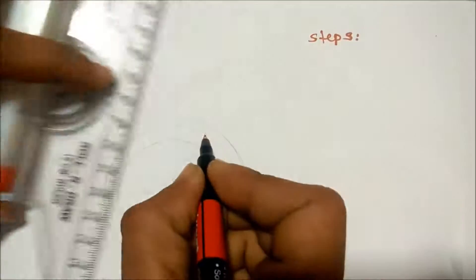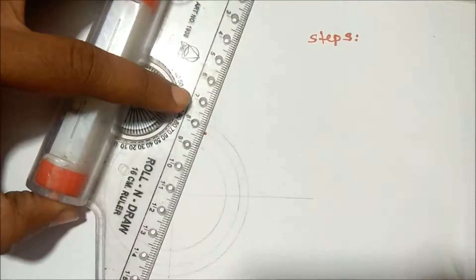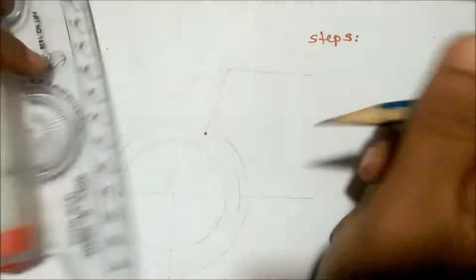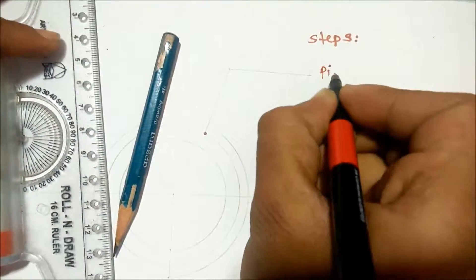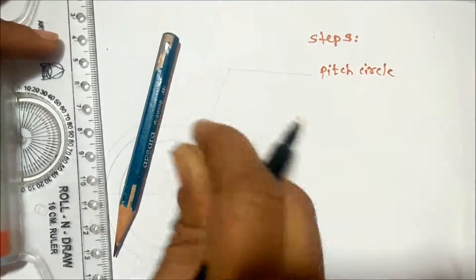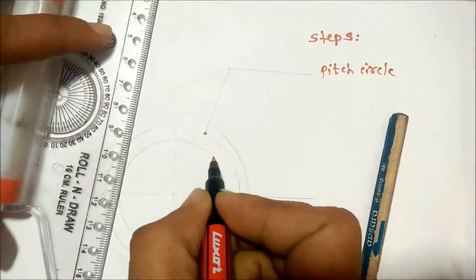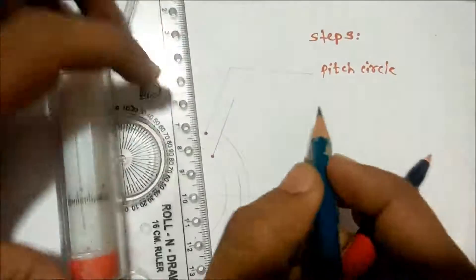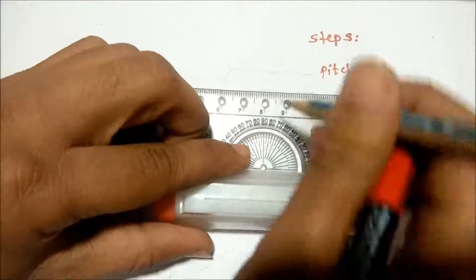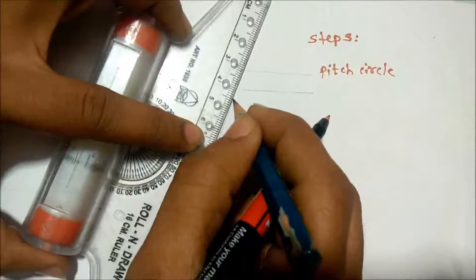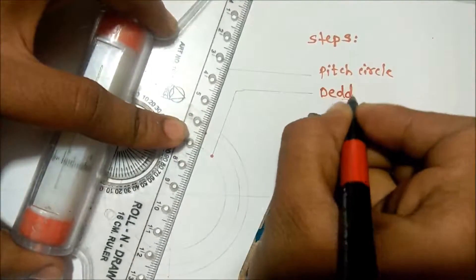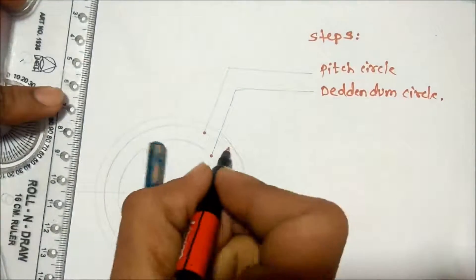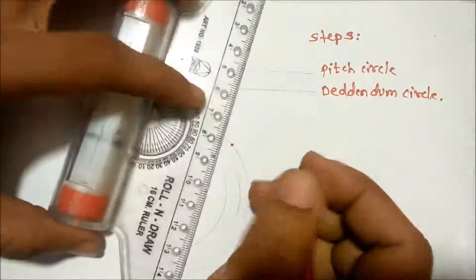The first step is to draw a pitch circle. Then the inner circle is the tip circle, and there is also the hidden datum circle. The outer circle is the root circle, also called the addendum circle.